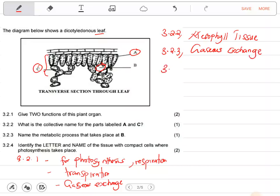Question 3.2.4: Identify the letter and the name of the tissue with compact cells where photosynthesis takes place. The rectangular and applied cells - we call them palisade mesophyll cells. So that is part A. It is rectangular kind of cells, and the name is palisade mesophyll.